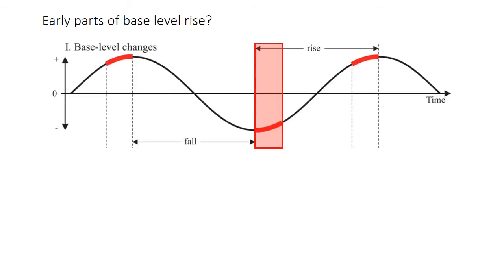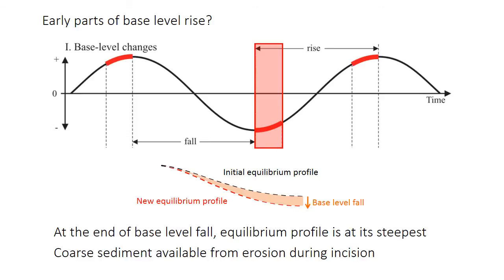So during the early parts of base level rise, accommodation space is being created, so the river will aggrade and deposit sediment to try and keep up with that rising base level, try and have its equilibrium profile match the rising equilibrium profile due to base level. So if we consider the simple case here where base level is being driven just by eustatic fluctuations, and the elevation of the source area is unchanged, what that means is that the equilibrium graded profile will be the steepest just at the beginning of base level rise. So after base level fall has completed, base level is at its lowest point. If the elevation of the headwaters is at the same point, the equilibrium graded profile will be steep.